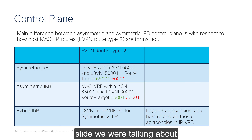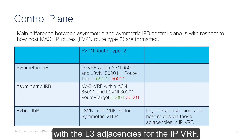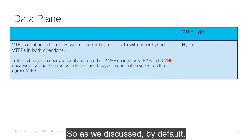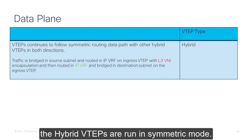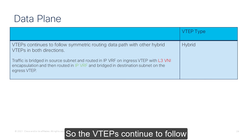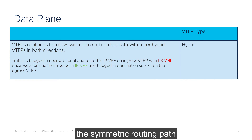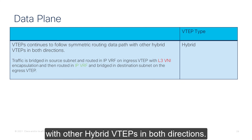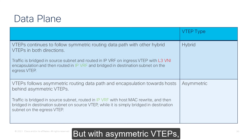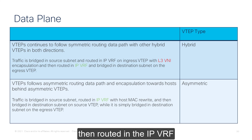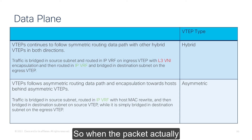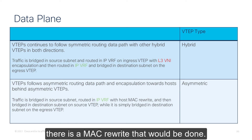That is why all symmetric VTEPs should also be configured with L3 adjacencies for the IP-VRF. As discussed, by default the hybrid VTEPs run in symmetric mode, so they continue to follow the symmetric routing path with other hybrid VTEPs in both directions. But with asymmetric VTEPs, the traffic is bridged and then routed in the IP-VRF with the host MAC rewrite. When the packet reaches the egress VTEP, if the MAC address is not local, a MAC rewrite is performed, and the packet is simply bridged on the egress VTEP.